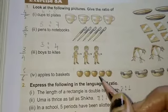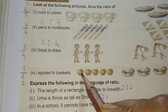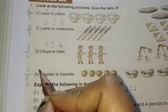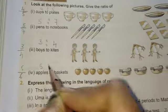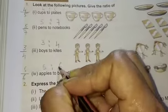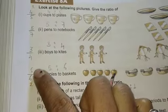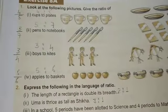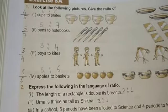Apple to the basket, so apple we have to count one, two, three, four, five and the basket we have to count one, two, three, four, five, six, six. So either we are writing this way or either we are writing this way, both ways are correct.